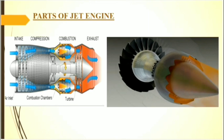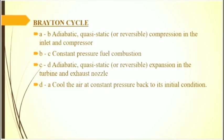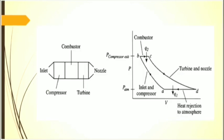The Brayton cycle is a thermodynamic cyclic process. A to B represents adiabatic quasi-static compression in the inlet and compressor. B to C represents constant pressure fuel combustion. C to D represents adiabatic quasi-static expansion in the turbine and exhaust nozzle, from which we can take some work out of the air to drive the compressor and use the remaining work to accelerate fluid for jet propulsion or to turn a generator for electrical power generation.